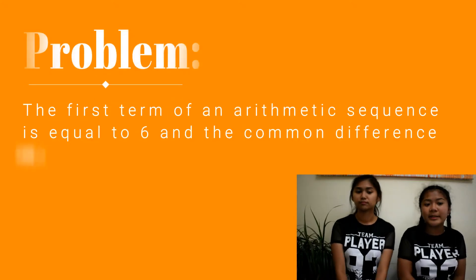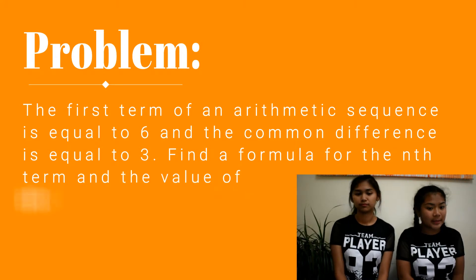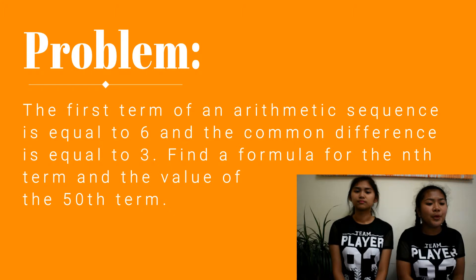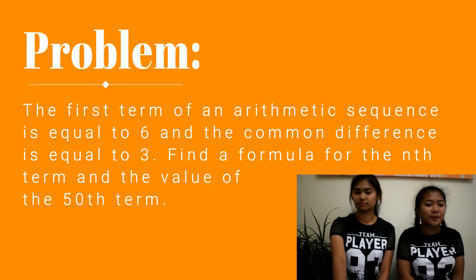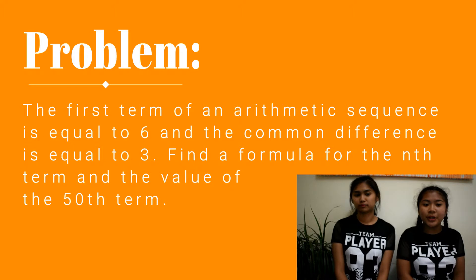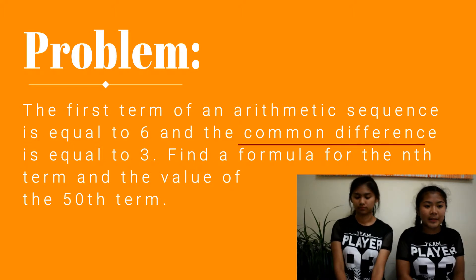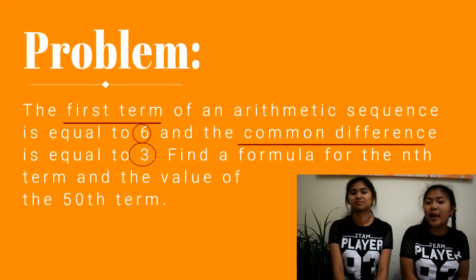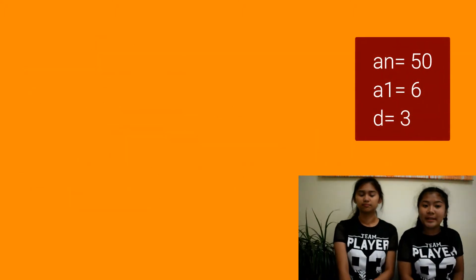Our first problem is the first term of an arithmetic sequence is equal to 6, and the common difference is equal to 3. Find the formula for the n-th term and the value of the 50th term. For our solution, use the value of the common difference, 3, and the first term, 6, in the formula for the n-th term given above. Now that we have the given, we can easily solve it.